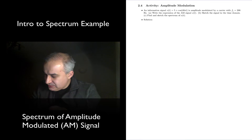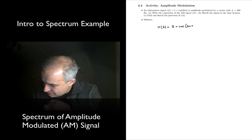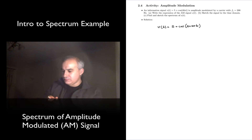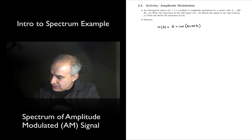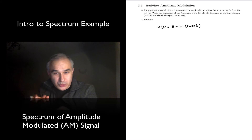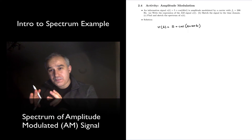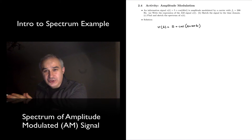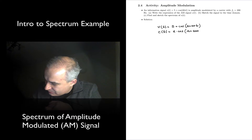So here we have an information signal, V(t). Let's write it: V(t) equals 5 plus cosine(2π · 20Hz · t). This is a slow information signal that we want to transmit using a carrier of a higher frequency — in this case, 200 hertz, which is still very low frequency and won't work in real AM radio, but the principles are the same. The carrier is 1 times cosine(2π · 200t).